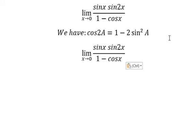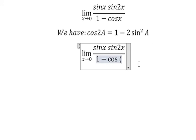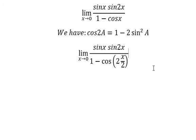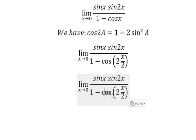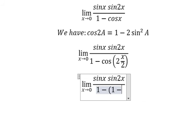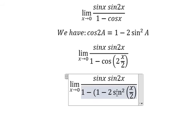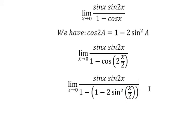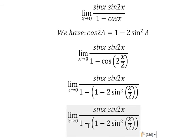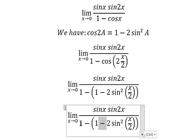We know that sin(s) is equal to 2 multiplied by sin(s/2) times cos(s/2), so we need to transform this one into this one. Next, negative times negative gives us positive.